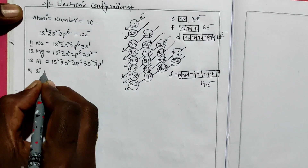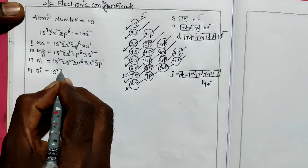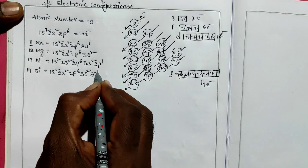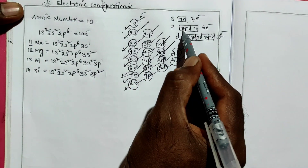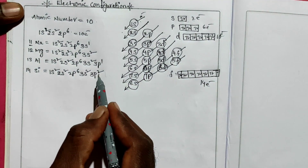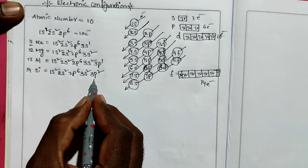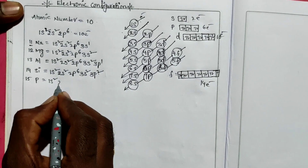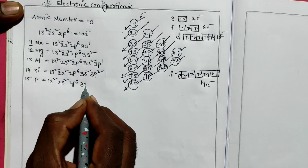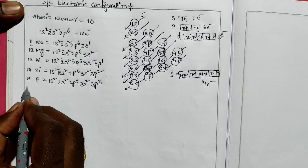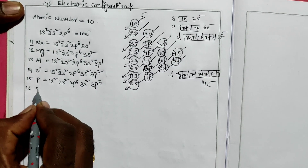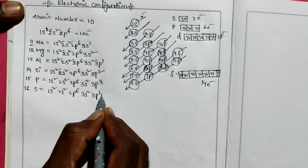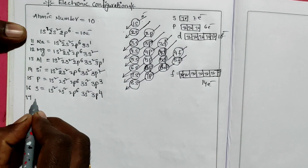Silicon is atomic number 14: 1s2, 2s2, 2p6, 3s2, 3p2. Atomic number 15 is phosphorus: 1s2, 2s2, 2p6, 3s2, 3p3. Atomic number 16 is sulfur: 1s2, 2s2, 2p6, 3s2, 3p4. Atomic number 17 is chlorine: 1s2, 2s2, 2p6, 3s2, 3p5.